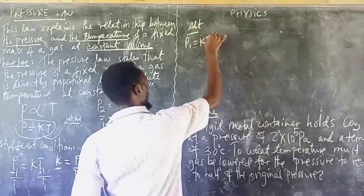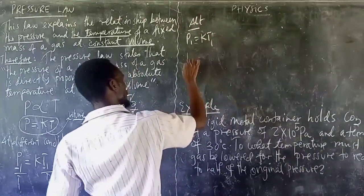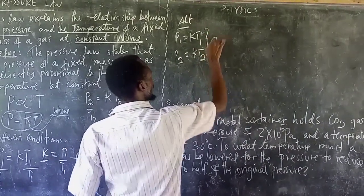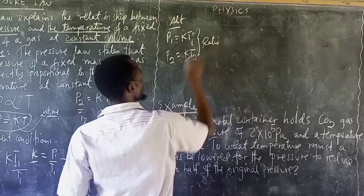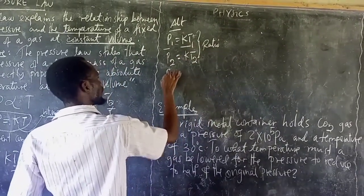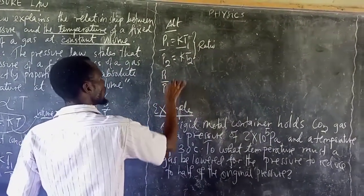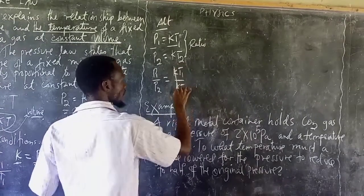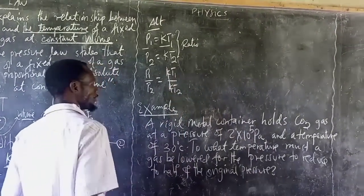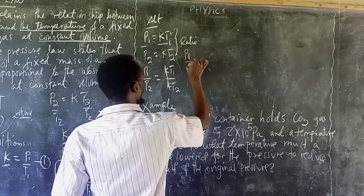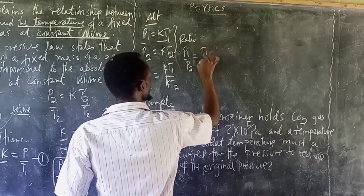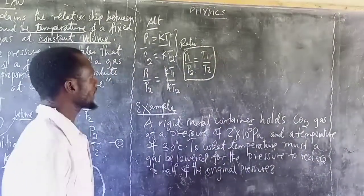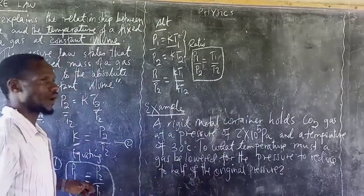Alternatively, P1 is equal to KT1 and P2 is equal to KT2. Finding the relation of these two equations by dividing, P1 over P2 equals KT1 over KT2. The K values cancel, giving P1 over P2 is equal to T1 over T2. This is also a formula you can use — you can decide to use either this formula or the previous one.